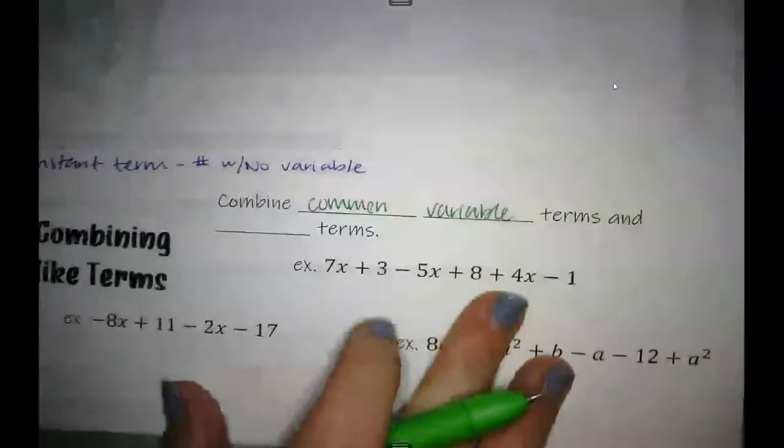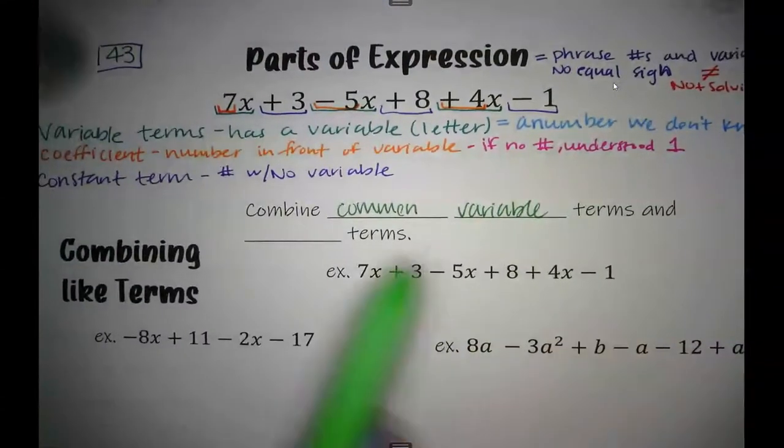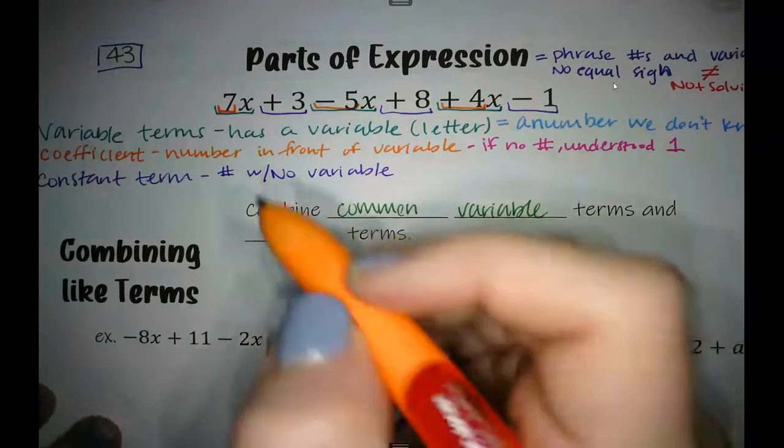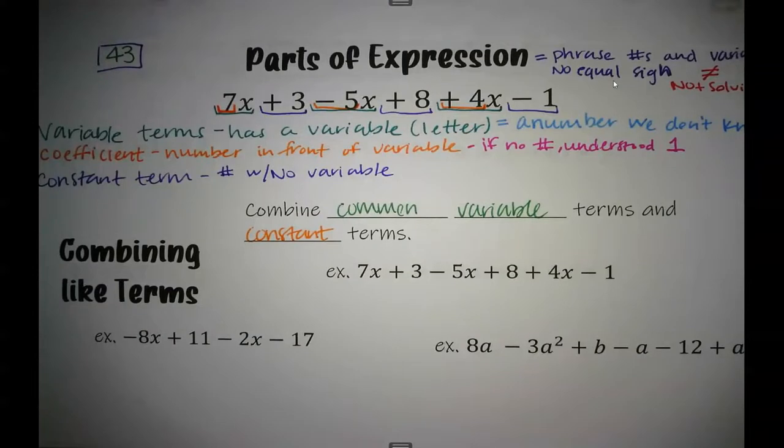Let's uncover it. Remember the parts of our expression: variable terms have numbers and variables, and constant terms are just our numbers.